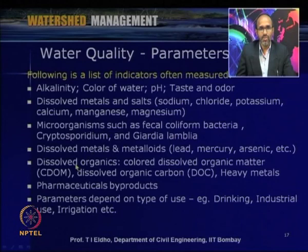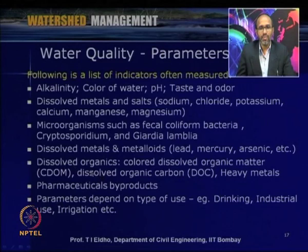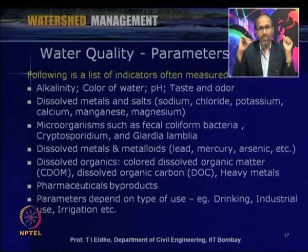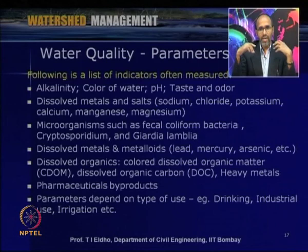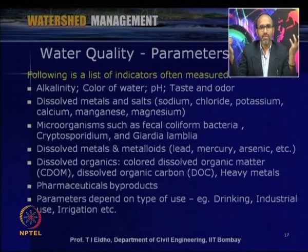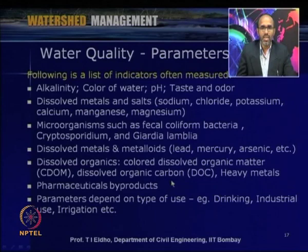Further parameters include dissolved metals and metalloids like lead, mercury, arsenic; dissolved organics like colored dissolved organic matter; dissolved organic carbon; heavy metals; pharmaceutical byproducts. When assessing water samples we look at the range of these parameters, and depending upon what kind of use — whether drinking, industrial, or irrigation — the treatment which we go for varies accordingly. These are some of the important parameters to consider as far as water quality is concerned.